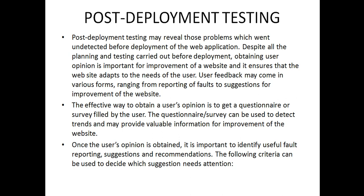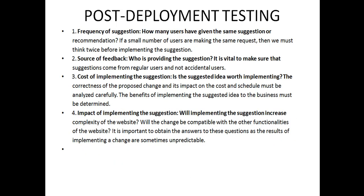Once user opinion is obtained, it is important to identify useful fault reporting, suggestions, and recommendations. The following criteria can be used to decide which suggestions need attention: frequency of suggestions — how many users have given the same suggestion; source of feedback — ensuring suggestions come from regular users and not accidental users; cost of implementing the suggestions — the correctness of the proposed change and its impact on cost and schedule must be analyzed carefully, and the benefits to the business must be determined; and impact — whether implementing the suggested change will be compatible with the other functionalities of the website.